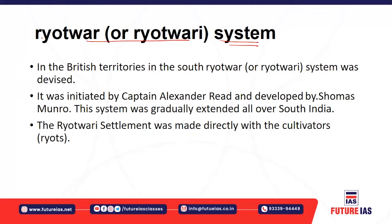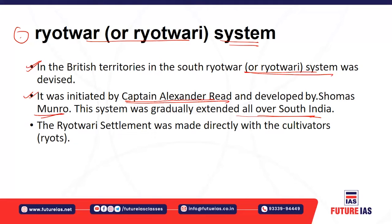The Ryotwari system was specifically for southern India. The British collected revenue directly from the Ryots — the cultivators. This system was initiated by Captain Alexander Reed and developed by Thomas Munro, gradually extending to all parts of southern India. Ryotwari means directly from farmers, so revenue was directly collected from the cultivators or Ryots.